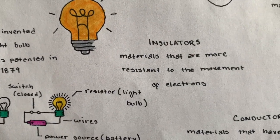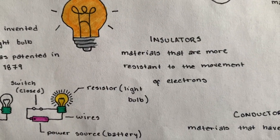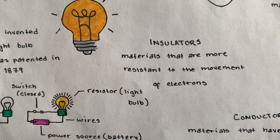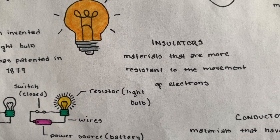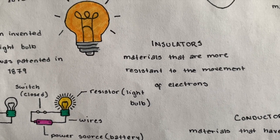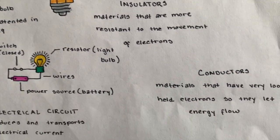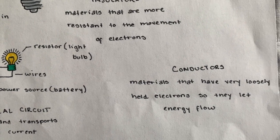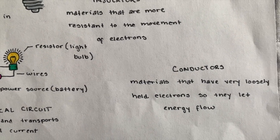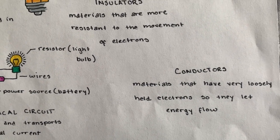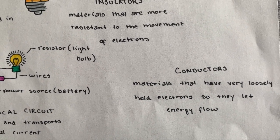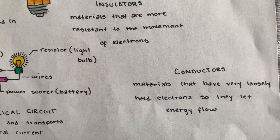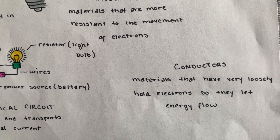We have insulators, which are materials that are more resistant to the movement of electrons. While conductors are materials that have very loosely held electrons, so they let energy flow.